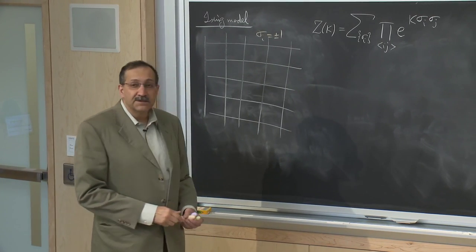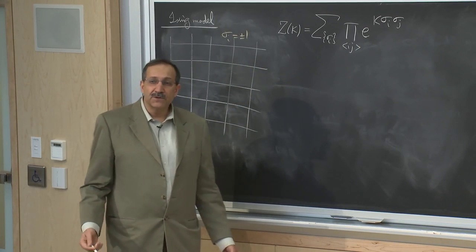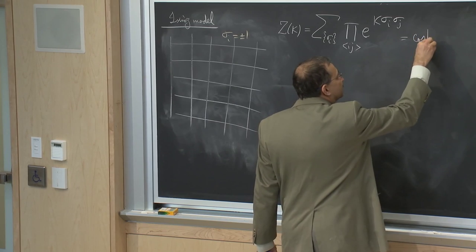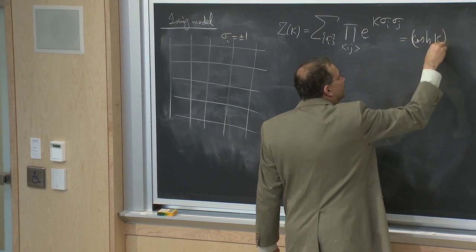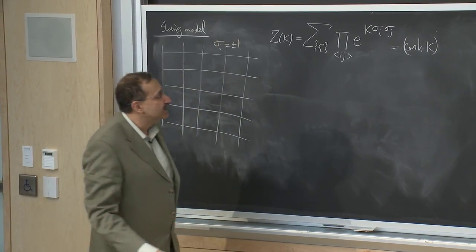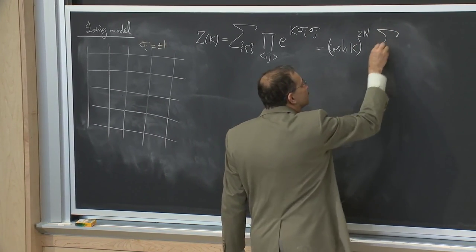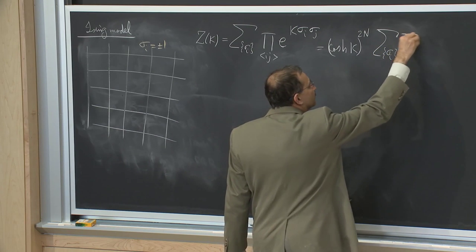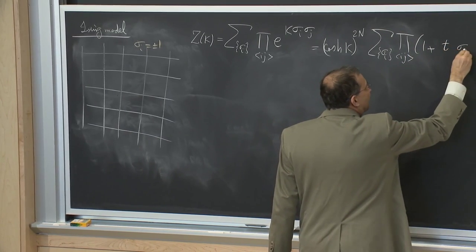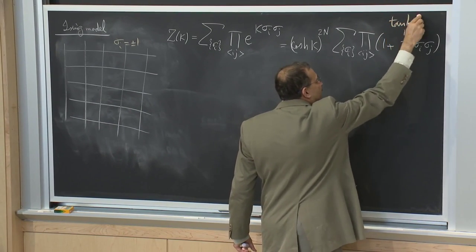To calculate the partition function, we have to sum over all 2^N configurations of N sites. This gives us a partition function that depends on this one parameter k, which is some energy divided by kT. We rewrote each one of these factors as a hyperbolic cosine times 1 plus tangent, and took out all the factors of the hyperbolic cosine.